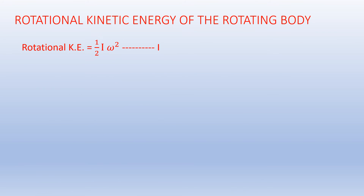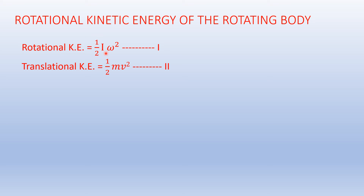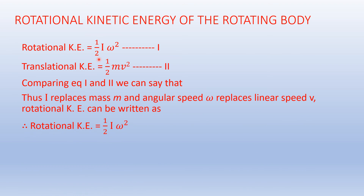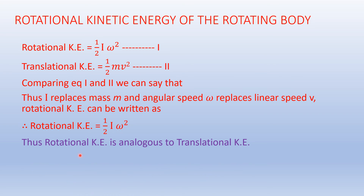Comparing the rotational kinetic energy formula with the translational kinetic energy formula, it is found that the ½ term is constant in both equations. Omega squared is the angular velocity in rotational kinetic energy, analogous to V squared, the linear velocity in translational kinetic energy. The mass in translational kinetic energy acts as inertia, and replacing it with I in rotational kinetic energy, we can say that I is the inertia for rotational motion. Thus, the rotational kinetic energy ½Iω² is analogous to the translational kinetic energy ½Mv².